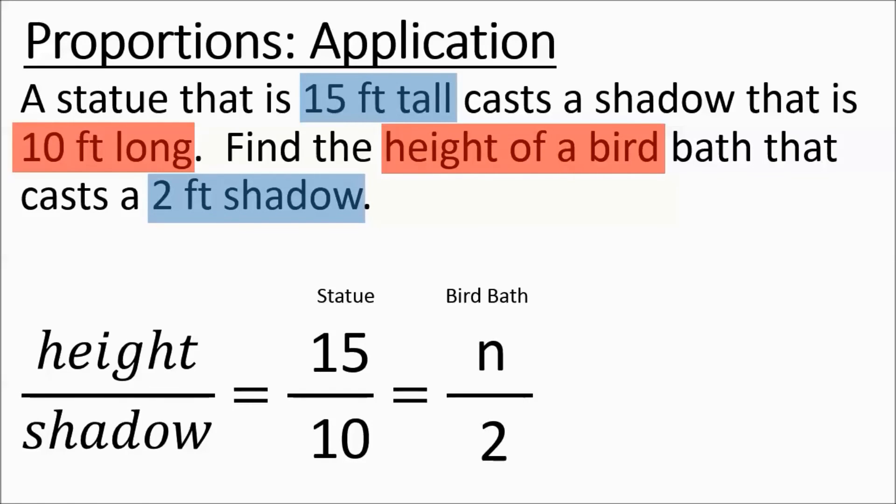Just be real careful. Usually in that second ratio, a lot of kids will mismatch these. But we're dealing with a 2-foot shadow. So anything dealing with shadow according to what we have set up is going to be a denominator. We're going to go ahead and do some application of cross product.